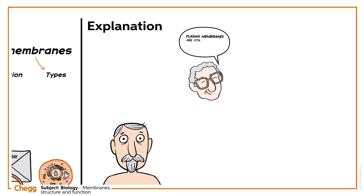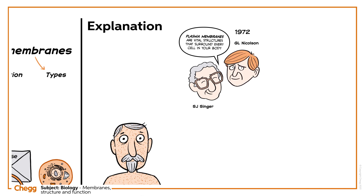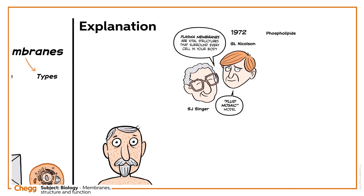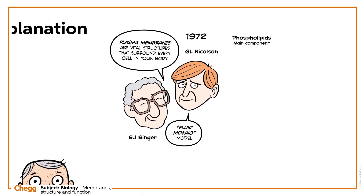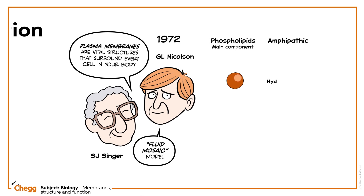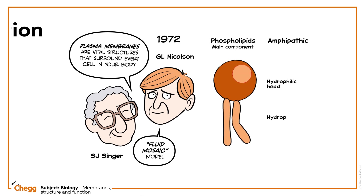Plasma membranes are vital structures that surround every cell in your body, and their structure was first described in 1972 by Singer and Nicholson as the so-called fluid mosaic model. Phospholipids are the main component. These are amphipathic — they have a hydrophilic head and a hydrophobic tail.